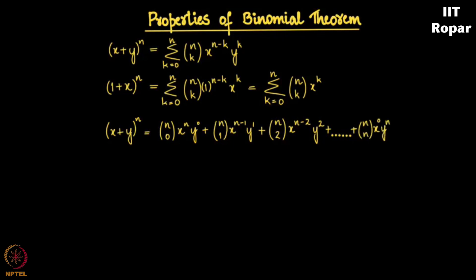Now what is the first term? It is n choose 0 into x to the n. y to the 0 is 1 and n choose 0 is again 1, and therefore I have only x to the n as the first term. The second term is n choose 1 into x to the n minus 1 into y. The third term is n choose 2 into x to the n minus 2 into y square and so on.